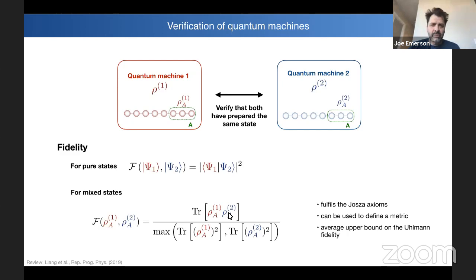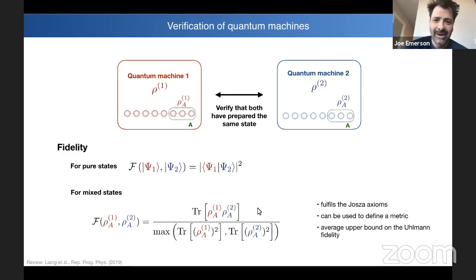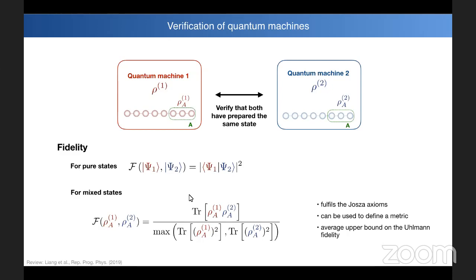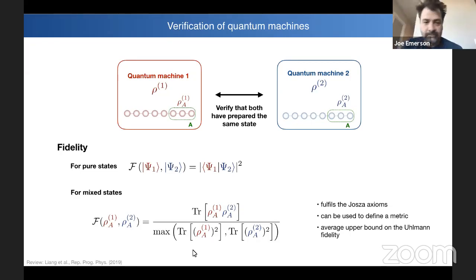Question from Joe Emerson: If both devices are so noisy they produce the identity state — which is unfortunately very experimentally realistic — would your F_max quantity give a fidelity of one, passing the test? Yes — if both machines are completely wrong in the same way, you get F_max equal to one. However, as a by-product you also see the purities of these individual devices. If there's no purity you would obviously conclude both machines are probably wrong, so you gain more information than just the fidelity value itself.